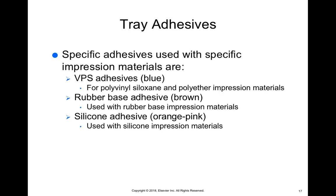Even if you don't technically know which adhesive goes with which material, just look at the box and see what the main ingredient is. If you see silicone, look for an adhesive made for silicone. If you see rubber, use an adhesive made for rubber. What's important is the ingredients — what material is being used to create that impression material. Brand doesn't matter; ingredients do.